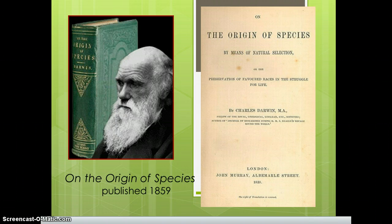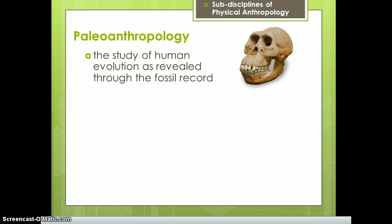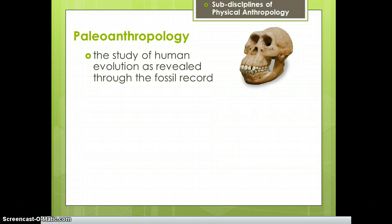Everything was accumulating into a discipline centered on figuring out why we see all the diversity around the world. One major sub-discipline is paleoanthropology. Breaking down the term: 'anthropology' is the study of humans, and 'paleo' means old or ancient. So paleoanthropology is the study of ancient humans — specifically the hominid ancestors of humans — as revealed through the fossil record. The fossil record is simply a catalog of all fossils that have ever been found.